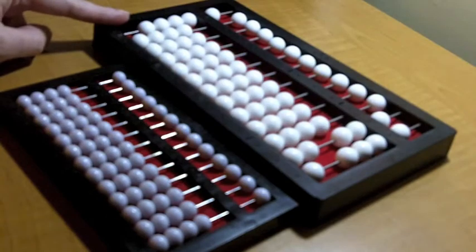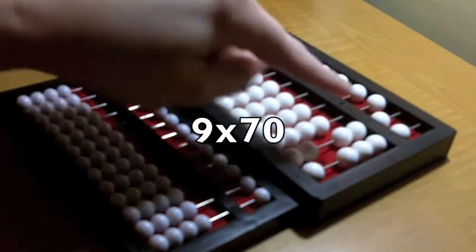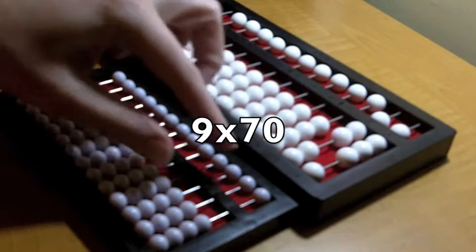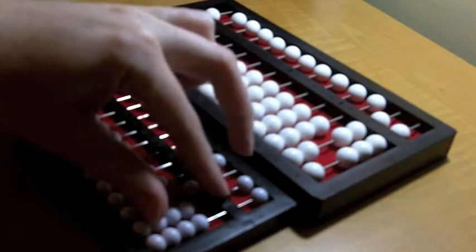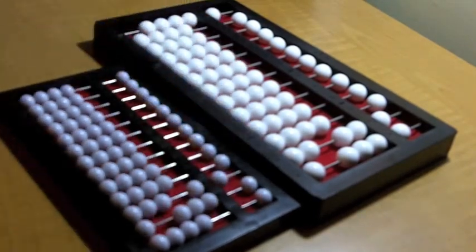Now I'm going to work from greatest to least. 9 times 7 is 630, so I'm going to set 630 on the bottom abacus.